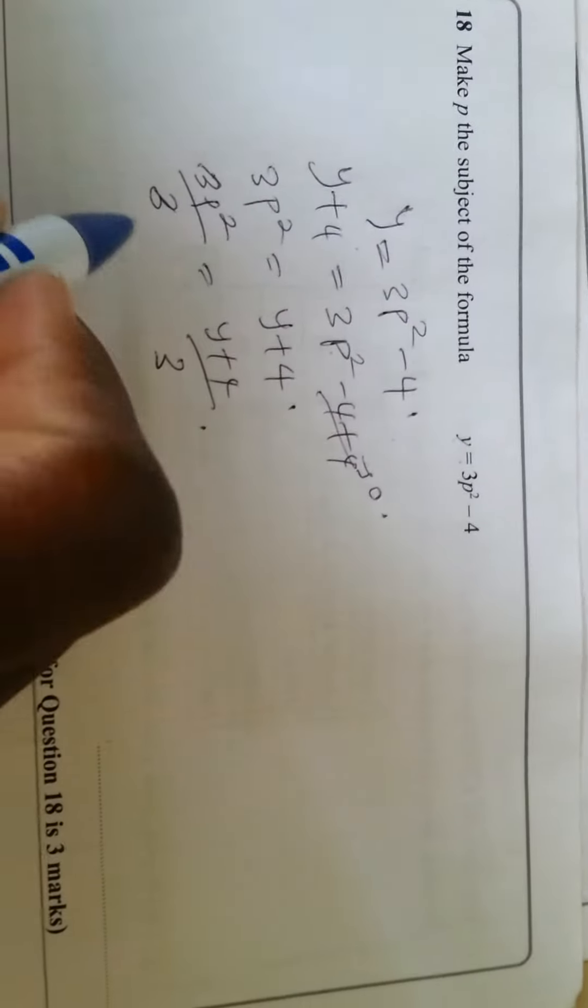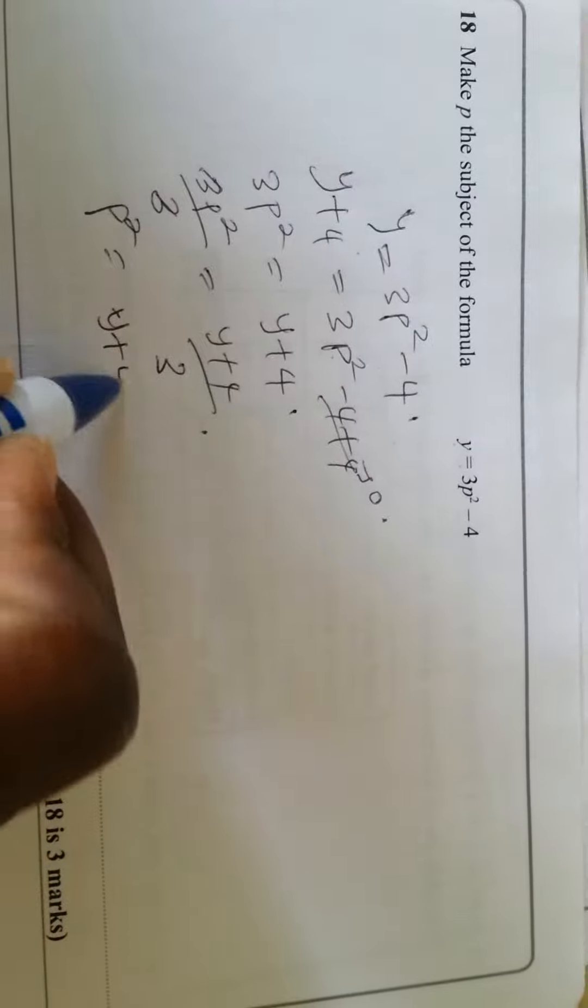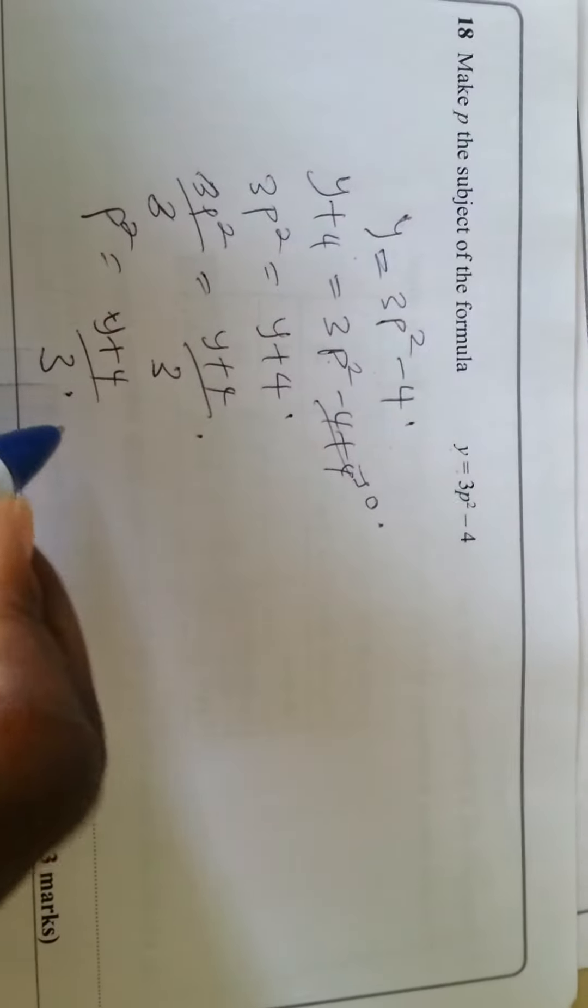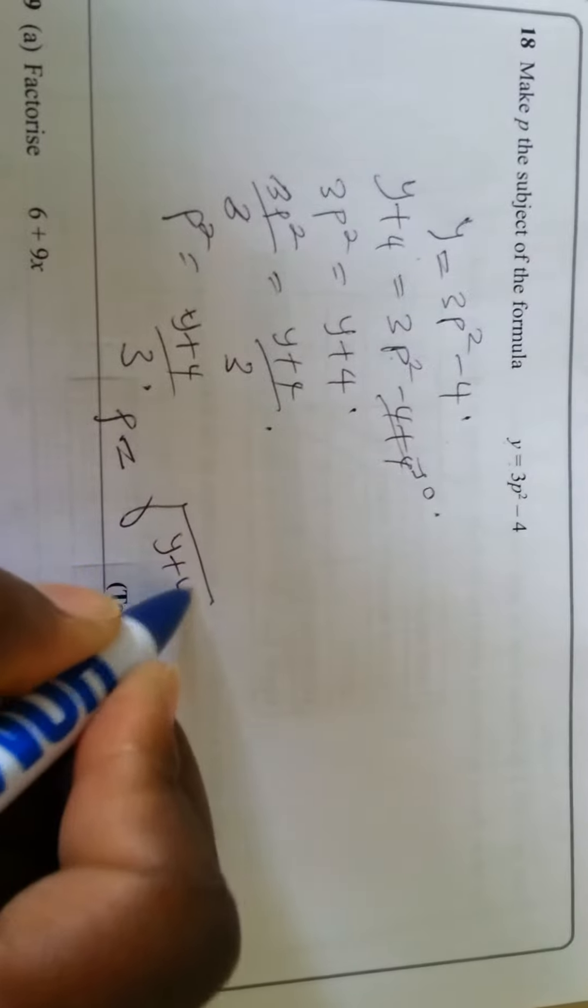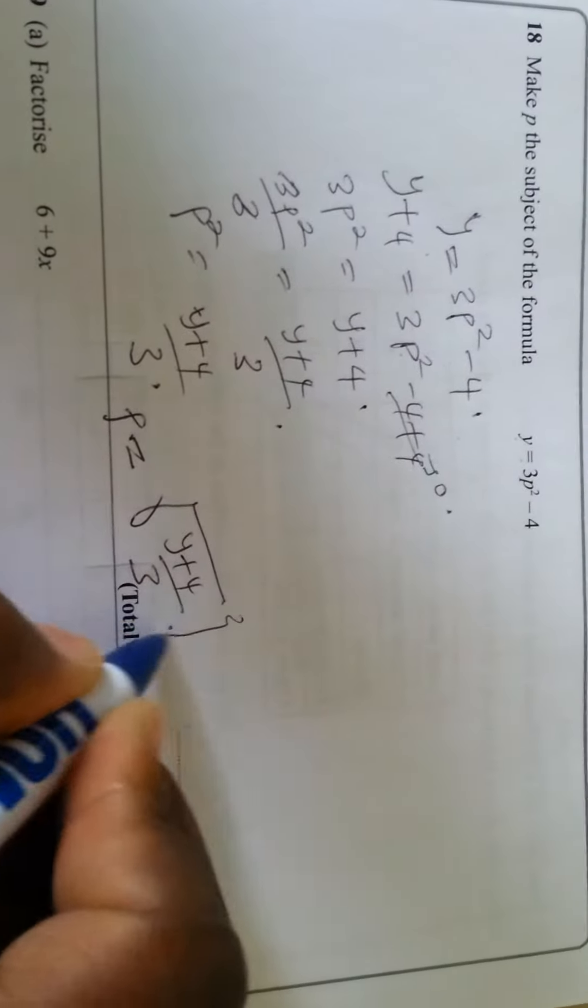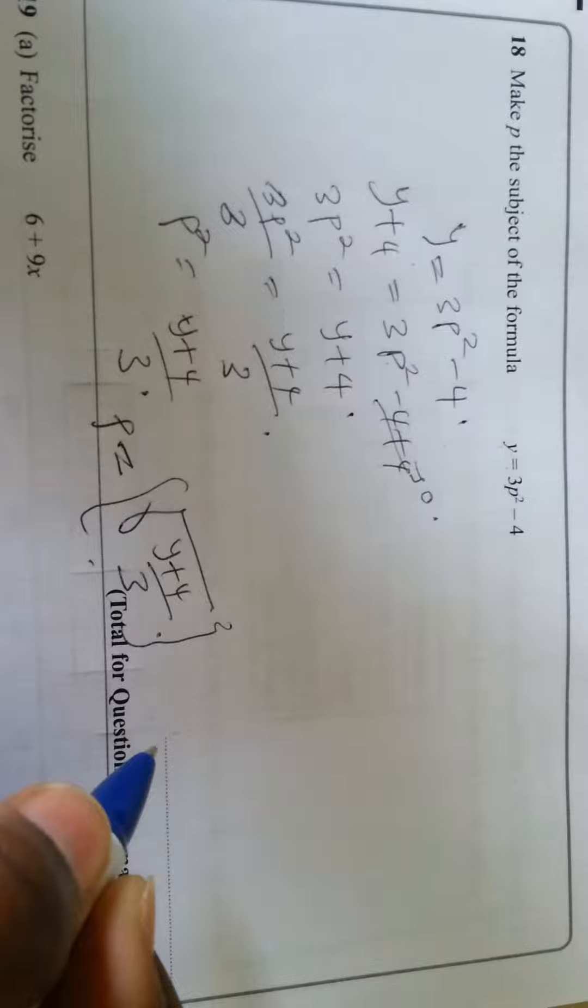This cancels out, so you have p² = (y + 4)/3. Our p would now be the square root of (y + 4)/3. So now we've made p the subject of the formula.